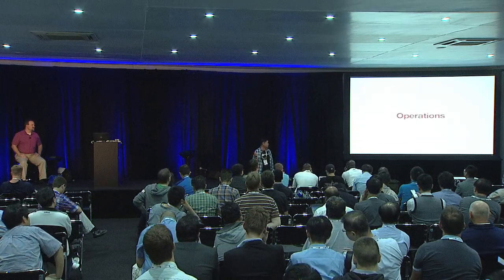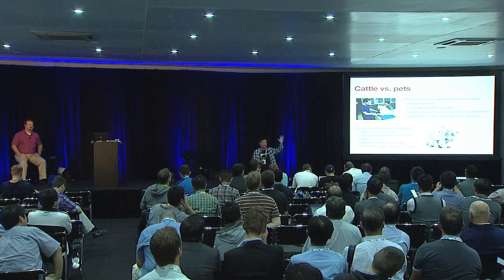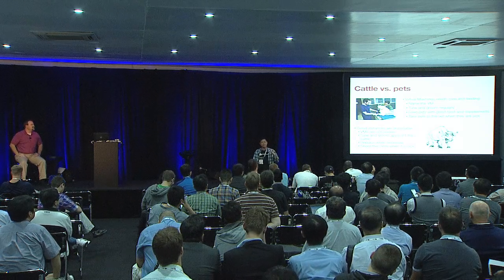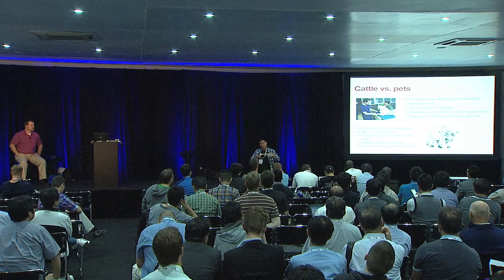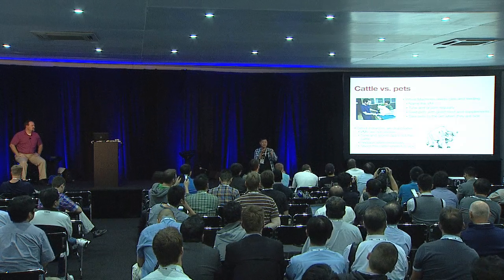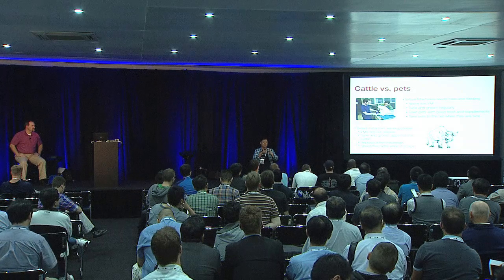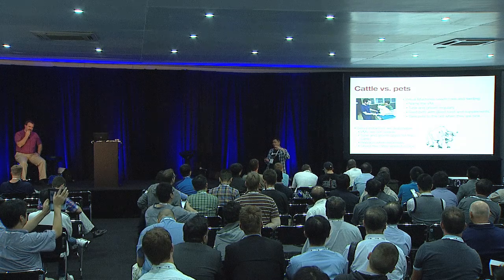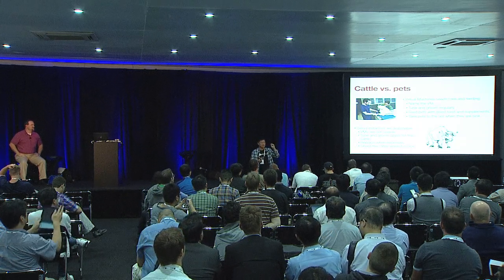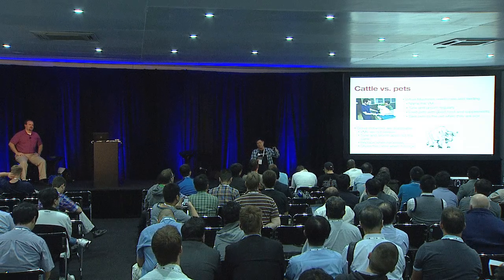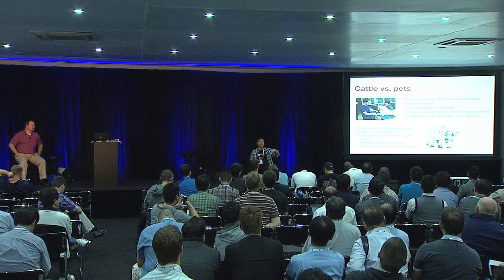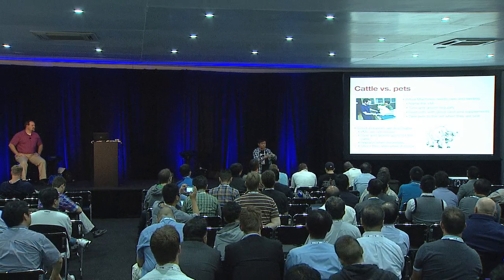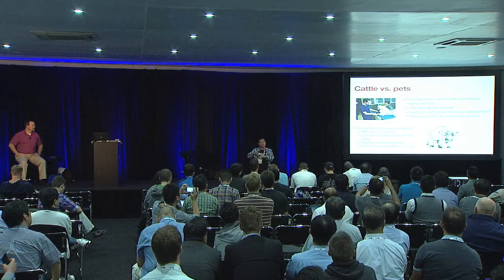How many of you have heard the cattle versus pets analogy? vSphere, because of where it has grown up, essentially creates custom virtual machines that you need to take care of. You may have a legacy application like an Oracle instance sitting on that virtual machine, and the last thing you want is for that virtual machine to get sick — because moving that database to another machine or another hypervisor node is not a trivial process.